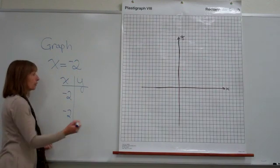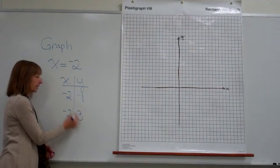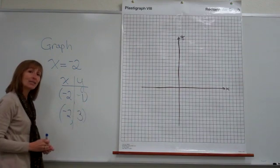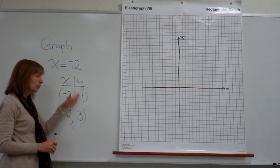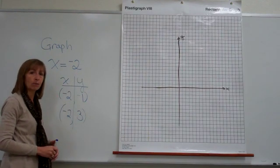So I can put a y value of negative 1 or I could put a y value of 3. This gives us our ordered pairs. I want to caution you, we can only do that arbitrarily because this original equation did not have a y in it.